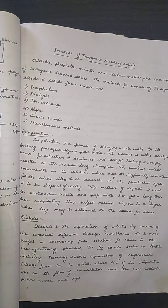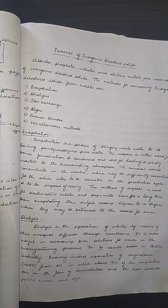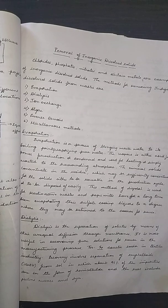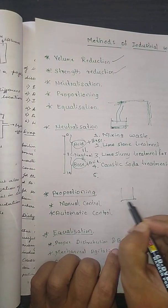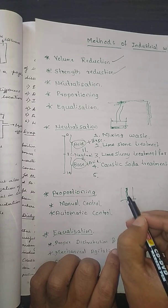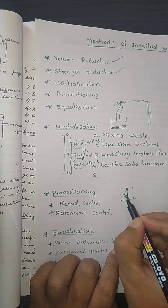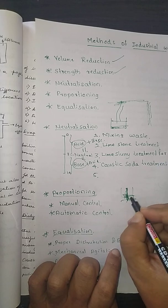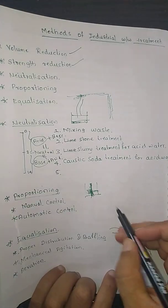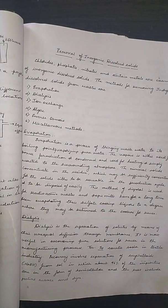The next method is dialysis — the separation of solids by means of their unequal diffusion through a membrane. When wastewater is passed through a membrane, the membrane has pores that arrest the inorganic solids, and water free from solids is obtained at the other end.